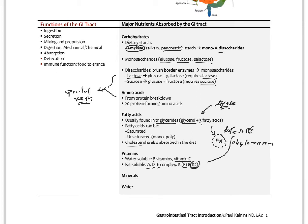Fat-soluble vitamins also need bile salts for absorption. Gallbladder disorders — like gallstones or insufficient bile salt production — can cause malabsorption of fats and fat-soluble vitamins, a big issue in malabsorption syndromes like celiac disease. Minerals such as calcium, potassium, and sodium, and water are also absorbed. Most nutrient absorption happens in the small intestine. The large intestine mainly handles electrolyte adjustment and water absorption, which is why Crohn's disease affecting the small intestine causes much more malabsorption than ulcerative colitis, which only affects the large intestine.